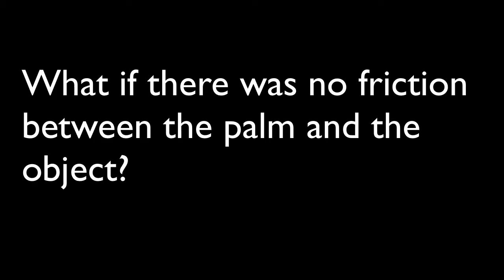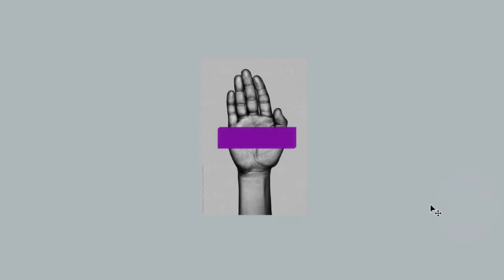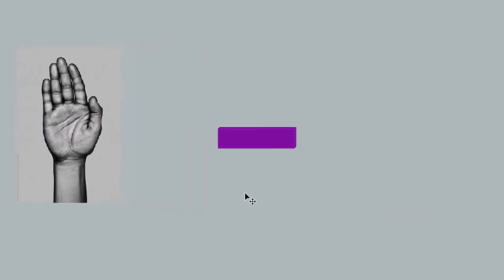You find that it carries the object with it. That is because there is a frictional force between the palm and the object. Suppose there was no friction between the two — if I now accelerate my palm to the left, it is going to slide away from under the object and the object will simply drop down. So it is quite clear that it is friction that accelerated that purple object to the left, which means the force of friction on the purple object is to the left.